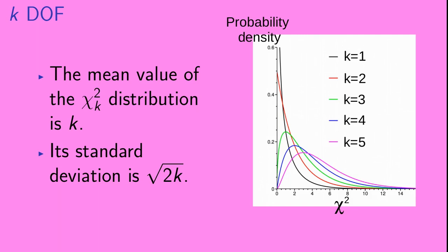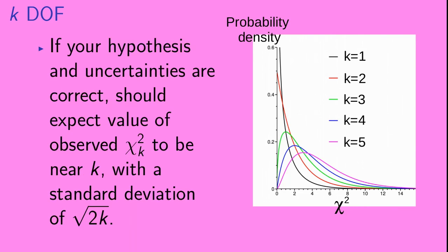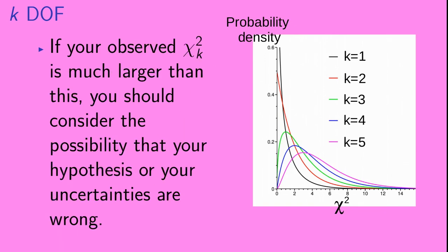The mean value of the chi-squared distribution for k degrees of freedom is k, and its standard deviation is the square root of 2k. If your hypothesis and uncertainties are correct, you should expect the value of your observed chi-squared to be around k, with a standard deviation of the square root of 2k. If your observed chi-squared is much larger than this, you should seriously consider the possibility that your hypothesis or your uncertainties are significantly off.